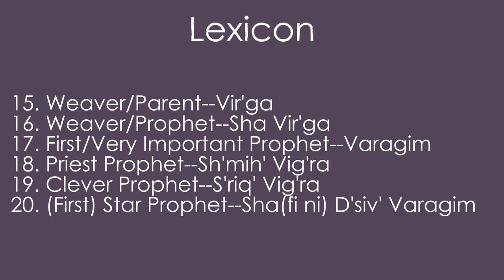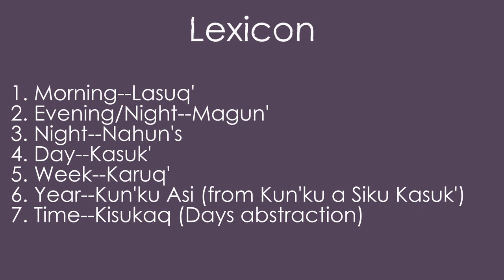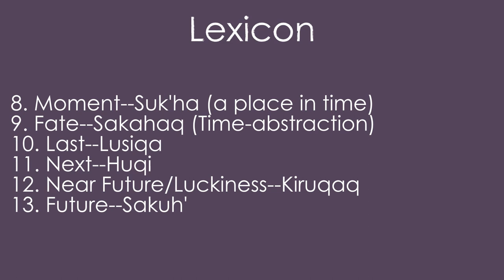A weaver or parent is firka. A weaver prophet is a shafirka, a very important prophet. The first prophets are the varagim. The priest prophets are shmih — hard to say — the sirik vihvihra. The clever prophets are the sirik vihra. The title of their hero, the first star prophet, is shafini dihsvi. Morning is lessuk, evening is mugu, night is nakhun, day is kasuk, week is kaduk, year is kunoku.